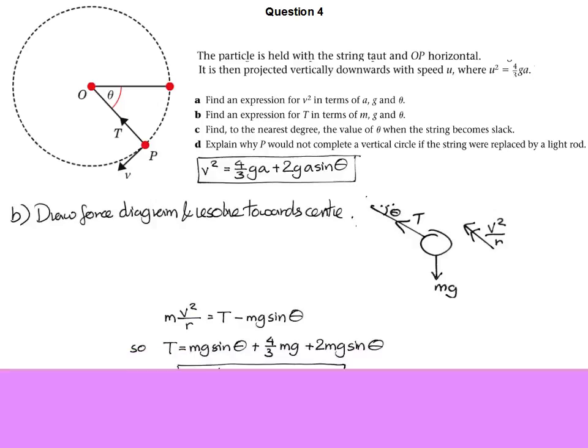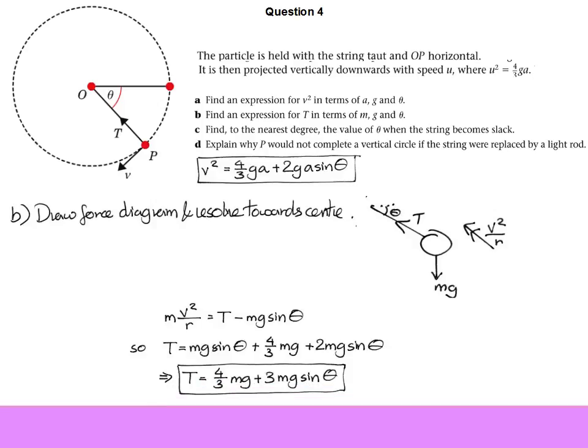We've got mass times acceleration equals the various forces. We'd worked out what v squared was in part A. We know R is actually A. Substitute that, rearrange, and we get quite a nice result. Again, we get something that we would expect. The tension is a certain fixed number plus something else which varies with the angle.